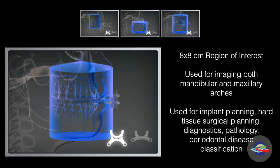And the largest field of view available to us is an 8 by 8 centimeter region of interest. This is used when we're interested in imaging both arches at the same time — again to plan for multiple implants, to develop surgical plans for hard tissue periodontal surgery, and to assess pathology. This field of view can also be used to replace a full mouth series of x-rays to diagnose and classify periodontal disease, as some patients simply cannot get through a full mouth series. Because the acquisition step of a CBCT is really only a few seconds, this option is often much more manageable for these patients.